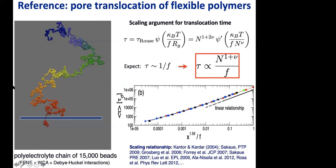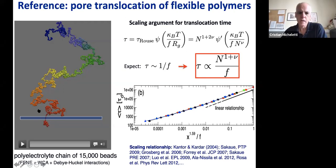Coming to the problem of translocation, let me show you the phenomenology first. This is a chain—an unknotted chain of 15,000 beads, so it's very long. It is fully flexible and colored with shades from one end to the other so you can see the sequence.